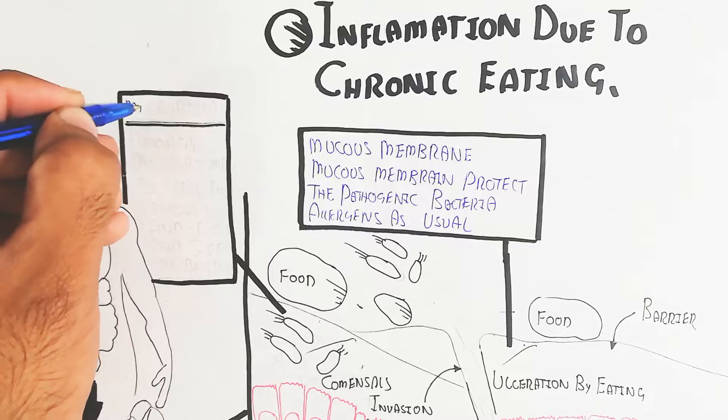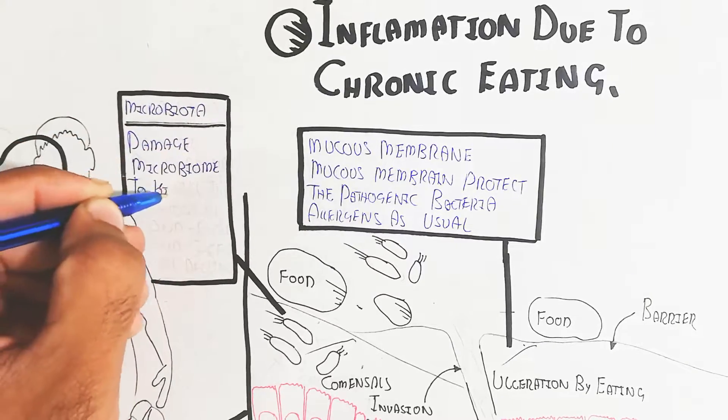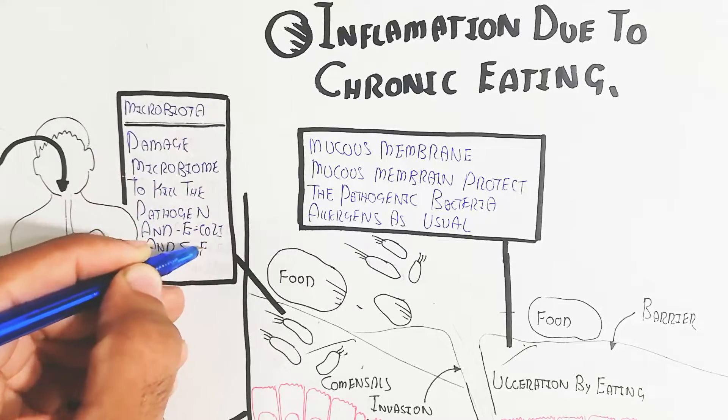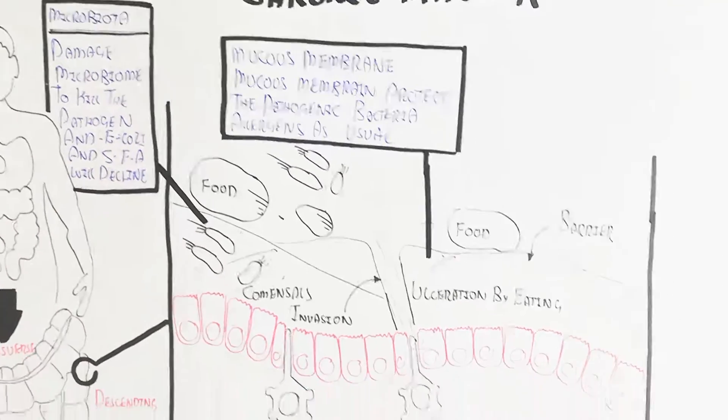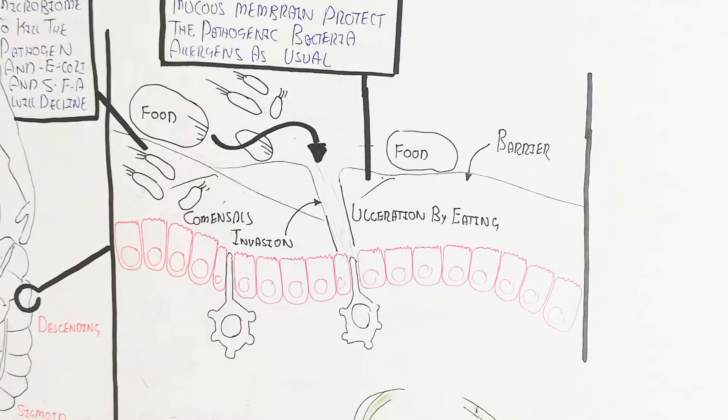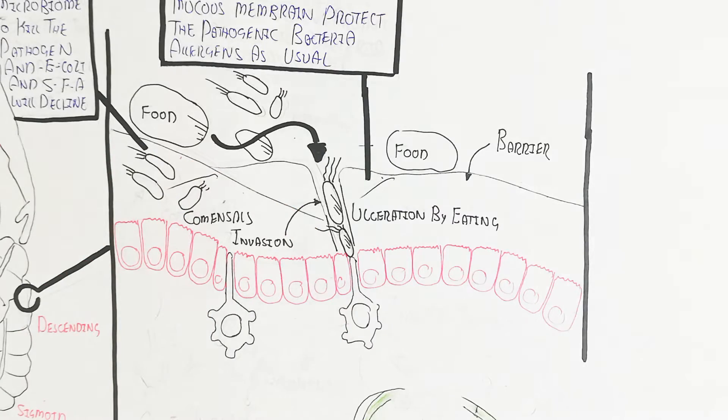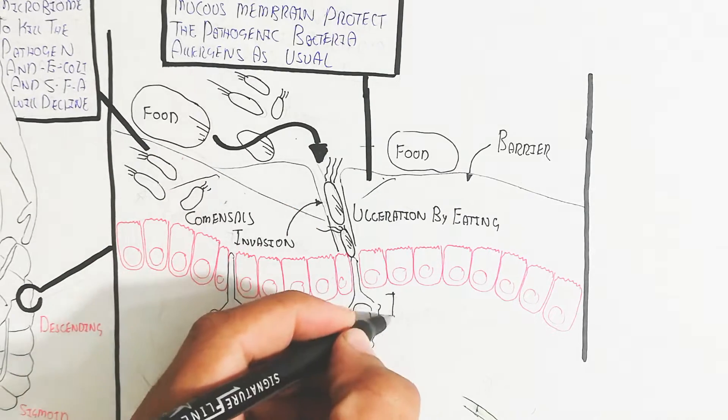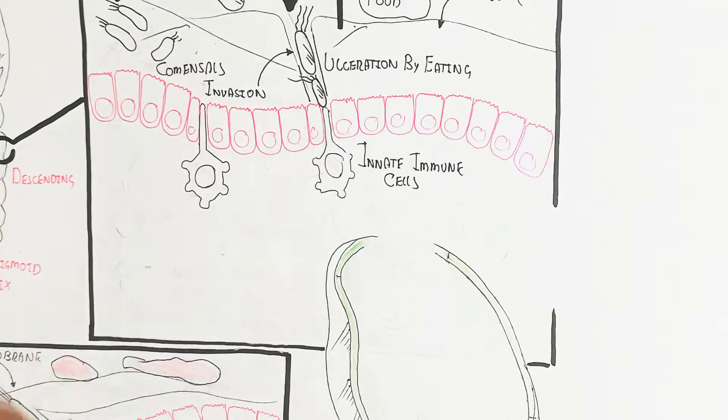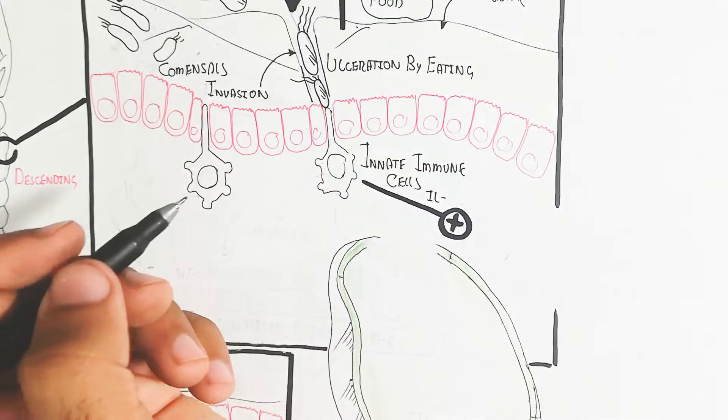The presence of mucous membrane helps decrease inflammation, but when mucous decreases, the microbiota becomes damaged. This damages the microbiome that kills pathogens like E. coli, and short chain fatty acid deficiency occurs. The mutualistic bacteria are killed due to the immune response itself, which damages mutualistic bacteria. Antigen presenting cells will recognize this pathogen, whether it's mutualistic or pathogenic, due to rupture and ulceration by eating. The mucous membrane ruptures and pathogens can easily invade.